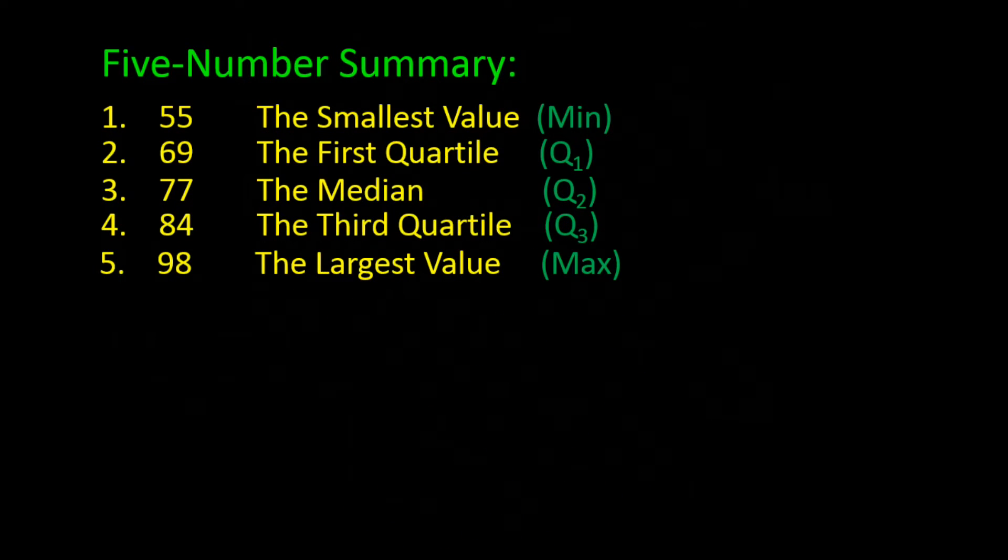So now we have our five-number summary. The smallest value is 55, the first quartile Q1 is 69, the median is 77, the third quartile is 84, and the largest value is 98. Now we can create a box plot from this five-number summary.